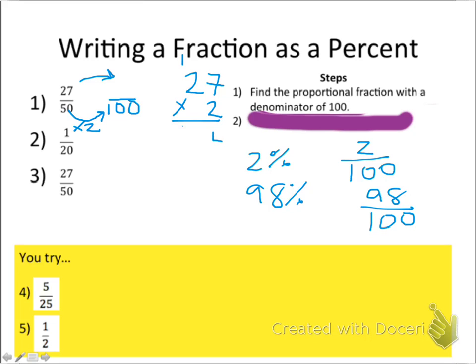7 times 2 is 14. 2 times 2 is 4, plus 1 is 5. So then we have 54 out of 100. We've done our first step. That's all the first step means.